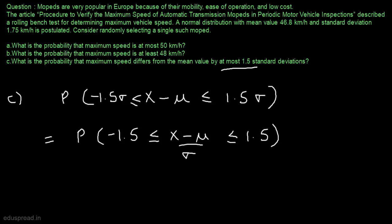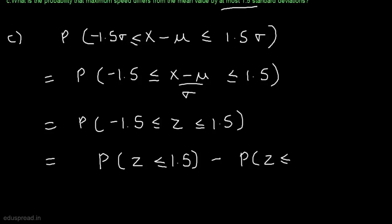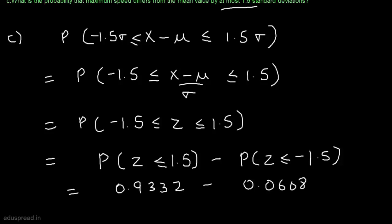Dividing the entire expression by sigma, this equals the probability that z is greater than or equal to minus 1.5 and less than or equal to 1.5. Since z is a continuous random variable, this equals the probability that z is less than or equal to 1.5 minus the probability that z is less than or equal to minus 1.5. From the standard normal table, these probabilities are 0.9332 and 0.0668 respectively. Subtracting, we get 0.8664. With this, we are done with part C as well.